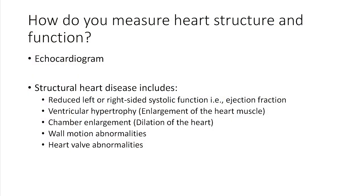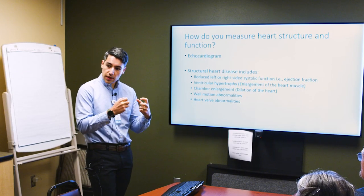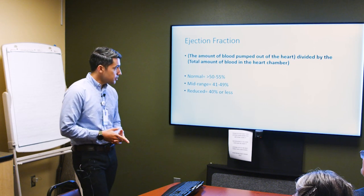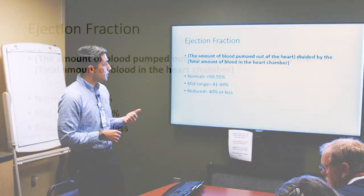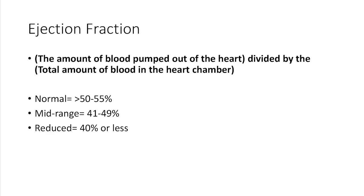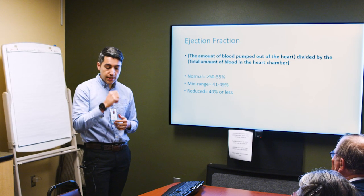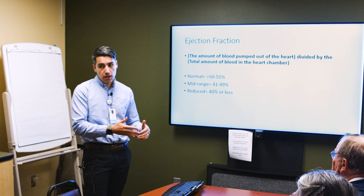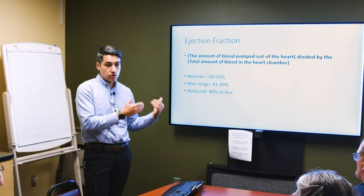Other structural abnormalities include enlargement of the heart muscle, called hypertrophy; dilation of the heart chamber; motion abnormalities in the walls of the heart; and abnormalities in the heart valves. Normal ejection fraction is more than 50 to 55 percent. Mid-range ejection fraction is 41 to 49 percent. Reduced ejection fraction is 40 percent or below. A lot of the research on medicines is categorized based on ejection fraction, and we have the most data in reduced ejection fraction.